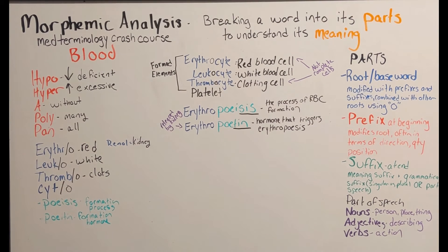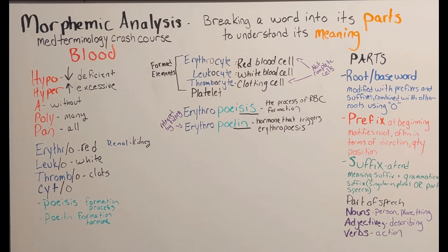Using your powers of logic, if erythropoiesis is the formation of red blood cells, what is the formation of white blood cells? That would be leukopoiesis, triggered by the hormone leukopoietin. The formation of thrombocytes is triggered by the hormone thrombopoietin, and the process of thrombocyte formation is thrombopoiesis.